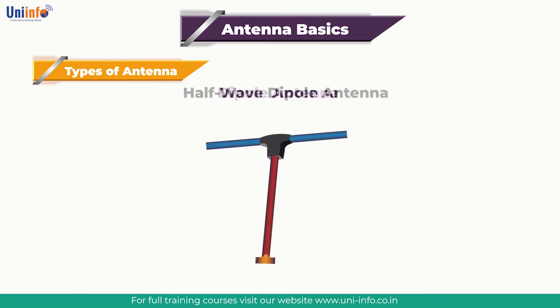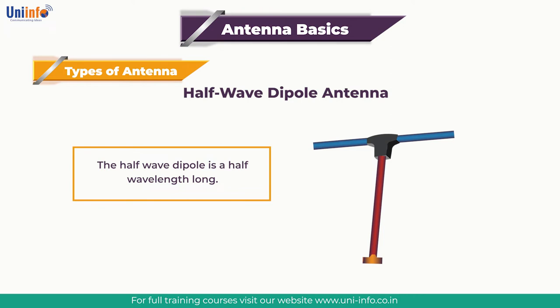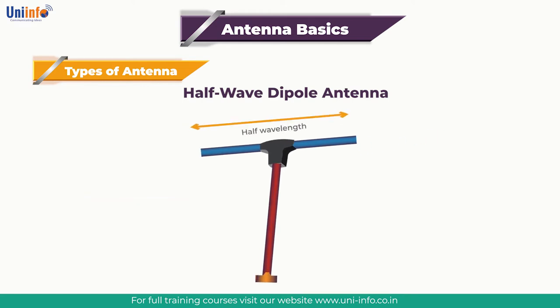The next type is the Half-Wave Dipole Antenna. The half-wave dipole is the most popular version of the dipole antenna or aerial. As the name implies, it is a half-wavelength long. This is the shortest resonant length that can be used for a resonant dipole, and it also has a very convenient radiation pattern. The half-wave dipole is formed from a conducting element — wire or metal tube — which is an electrical half-wavelength long.